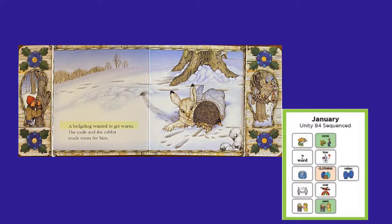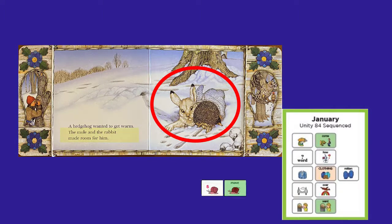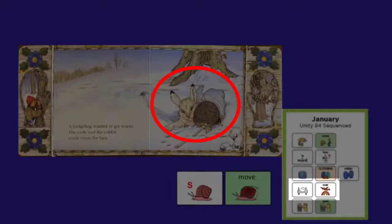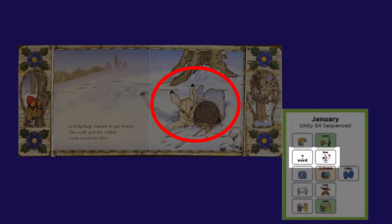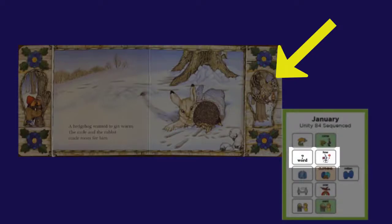A hedgehog wanted to get warm. The mole and the rabbit made room for him — they had to move over to let him in the mitten. I wonder how many animals will fit in there. Who do you think wants to come in the mitten now?